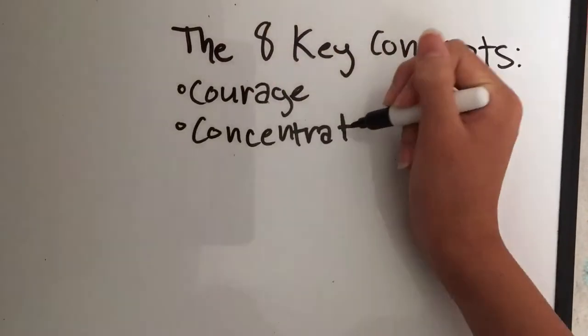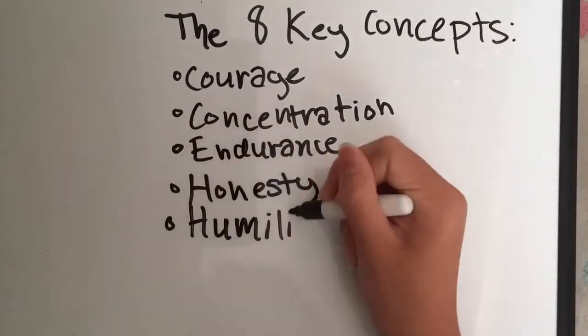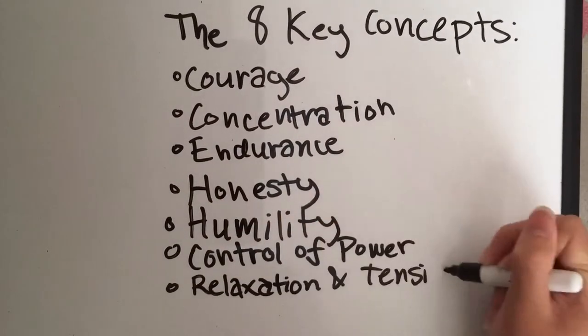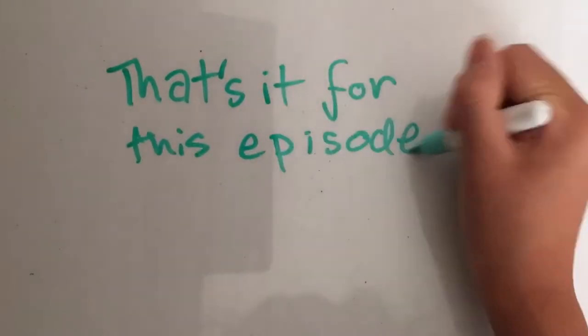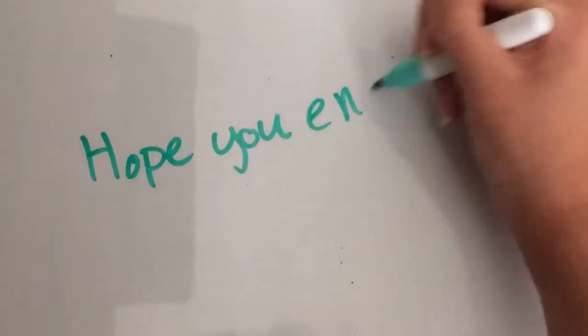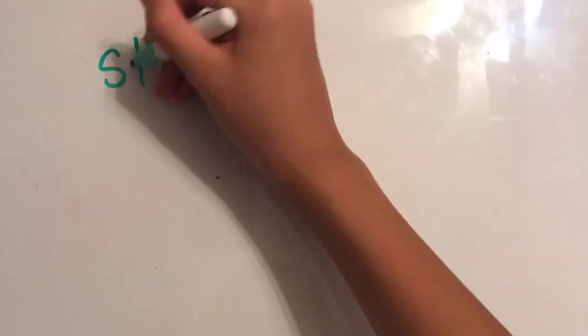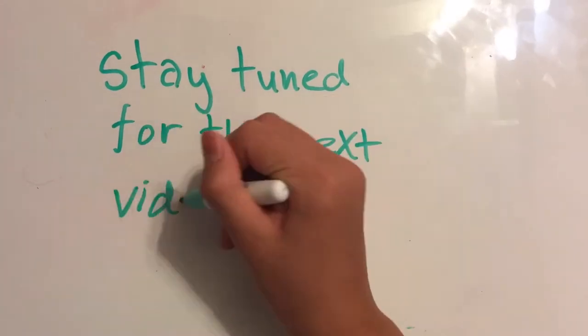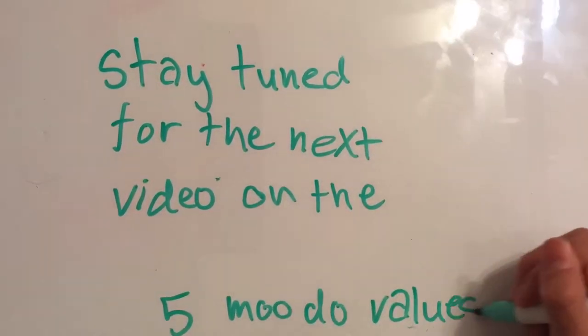And those are all the eight key concepts. Applying all of these into our training will result in better character and Tsubak-do experience. That's the end of this episode. I hope that it helps you understand more about the eight key concepts and their meanings. Stay tuned for next episode, which are about the five Buddha values of Tsubak-do. Goodbye!